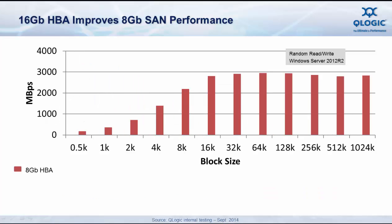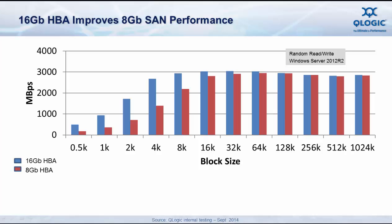Now let's look at the bandwidth performance. With the 8GB HBA, we have around 1,500 MB per second at a block size of 4K. In the test configuration, we maxed out at around 3,000 MB per second using the 8GB Fibre Channel HBA connected to the 8GB Fibre Channel SAN. Now swapping out for a 16GB HBA, you can see that there's a significant improvement in performance in small block sizes.